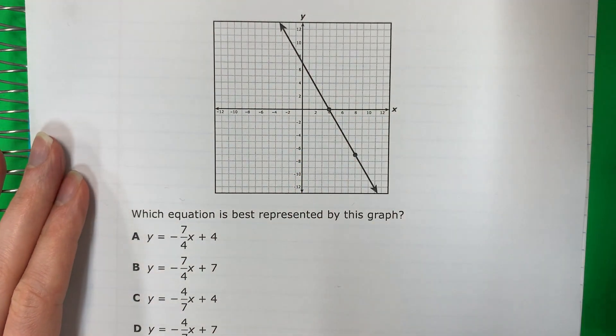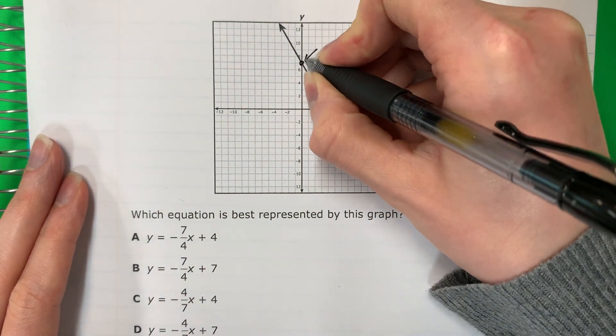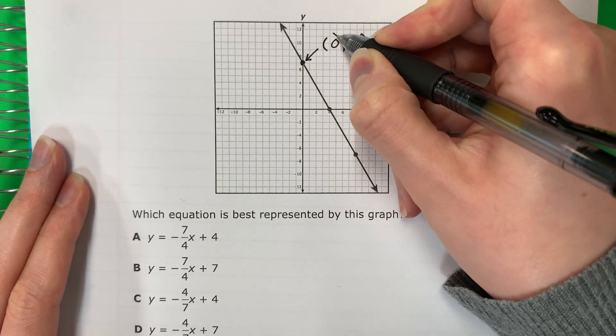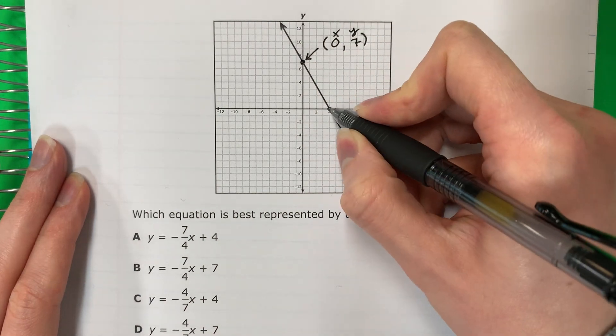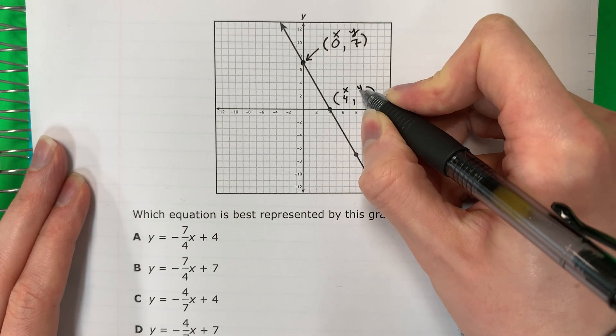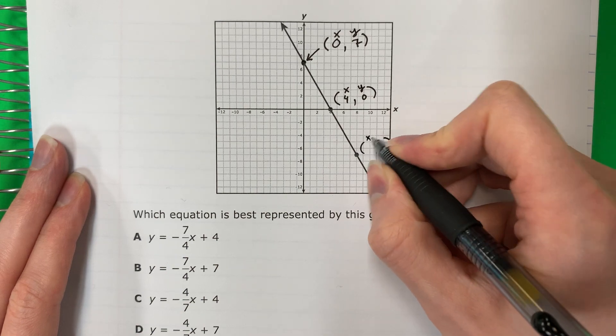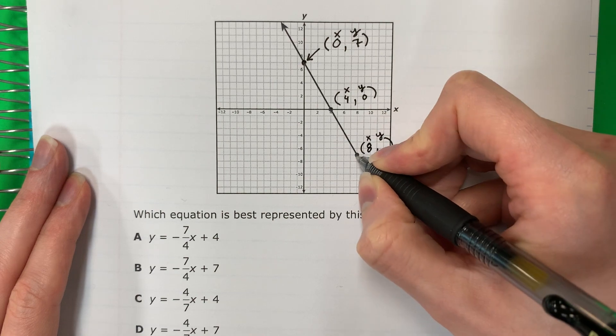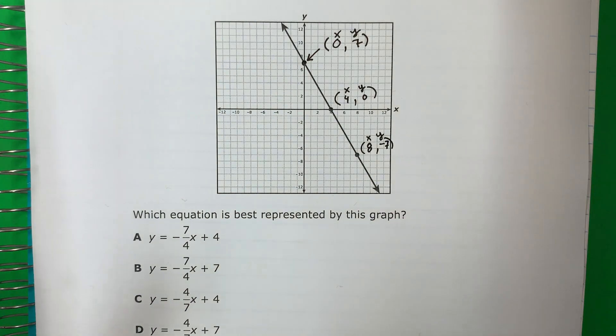So the first thing you need to do is pick two points. So my first point I'm going to pick is this one right over here. That is X, zero and Y, seven. And this point is also good. It's X is four, Y is zero. You could also use this one that they have. X, Y. It looks like X is eight and Y is negative seven. So you only need two.